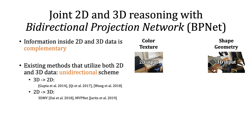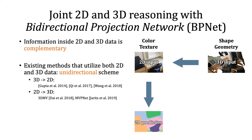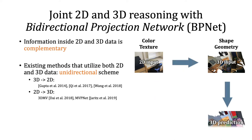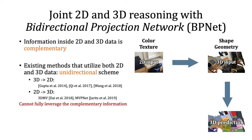Existing methods that utilize both 2D and 3D data for recognition mostly adopt the unidirectional scheme, such as incorporating 3D information for 2D understanding, or utilizing 2D information to assist 3D recognition. However, we argue that the unidirectional scheme cannot fully leverage the complementary information.